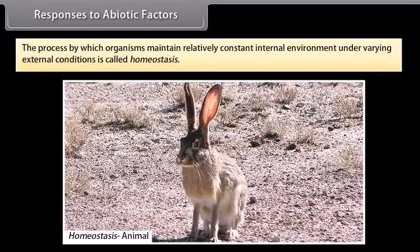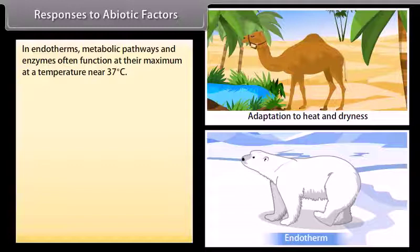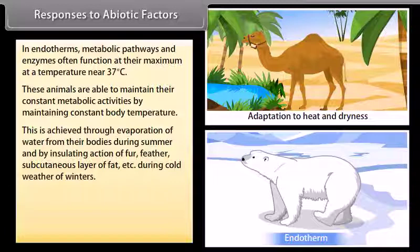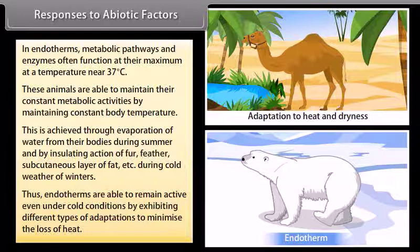Responses to abiotic factors: The process by which organisms maintain a relatively constant internal environment under varying external conditions is called homeostasis. In endotherms, metabolic pathways and enzymes often function at their maximum at a temperature near 37 degrees Celsius. These animals maintain constant metabolic activities by maintaining constant body temperature. This is achieved through evaporation of water from their bodies during summer and by the insulating action of fur, feathers, and a subcutaneous layer of fat during cold weather. Thus endotherms remain active even under cold conditions by exhibiting different types of adaptations to minimize the loss of heat.